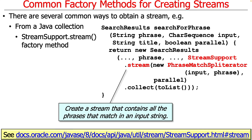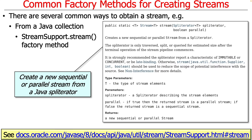Another option is StreamSupport.stream(), which is actually something we're going to show as we look more deeply into the simple search stream example. In this case, we're going to create a spliterator — we'll explain what a spliterator is later; it's a way of taking input and breaking it up into chunks — and make it the input to the StreamSupport.stream() method, which takes a spliterator and a boolean and creates either a sequential or parallel stream.